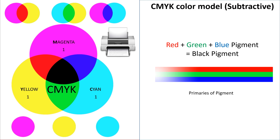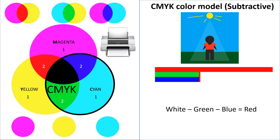Okay, so we're going to put ones next to our three primary pigment colors: cyan, magenta, and yellow. Next, we're going to put twos next to our secondary pigment colors. And we'll explain why we did this in a moment, but first an example.